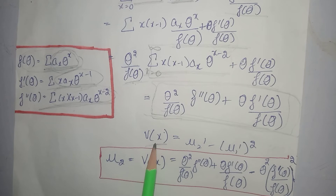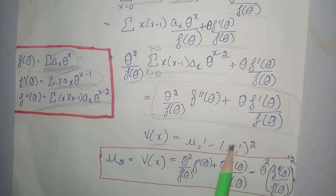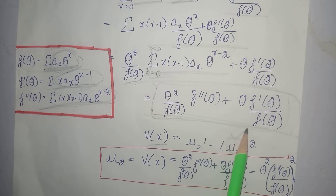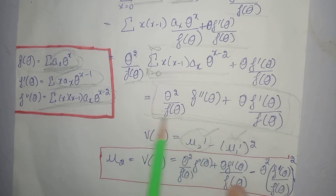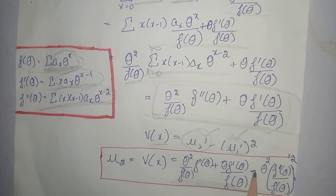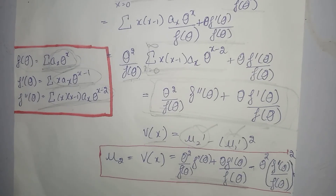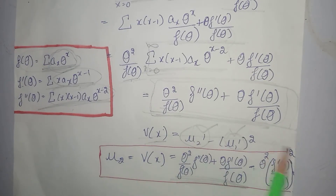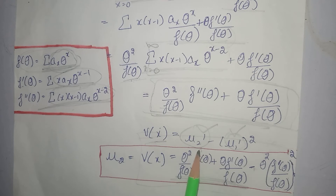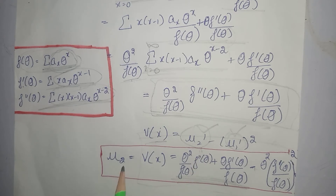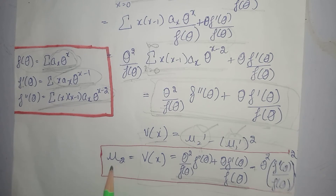Now variance nikalna tha jo ki iski equal tha — mu2 dash minus mu1 dash ki square. Mu1 dash, that is mean, uski value hum ne already nikaal li hui thi. Mu2 dash ki value hum ne nikaal li; mu2 dash ki value hum ne put kar di. Minus mu1 dash ki square karke yahan put kar diya. So this all is the variance of power series distribution, which is also denoted as mu2 — that is, second moment about mean.